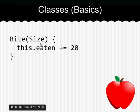Bite, which we have a size parameter, which we don't actually use in this simplified example. We change this.eaten to whatever it is, plus 20. So, we add 20 to it. If our certain apple.bite was called five times, it would be 100. However, multiple apples can have different amounts of them eaten at any given point in time, just as real apples can.